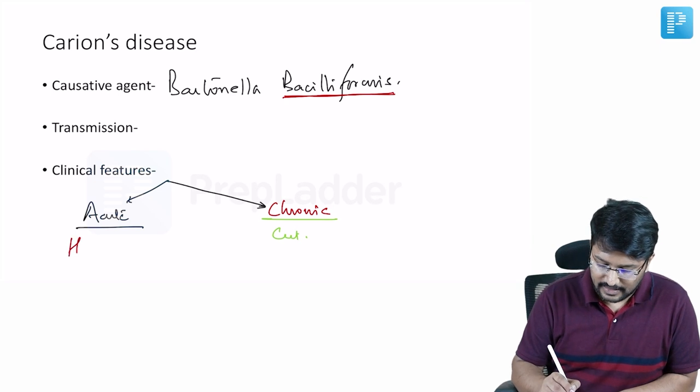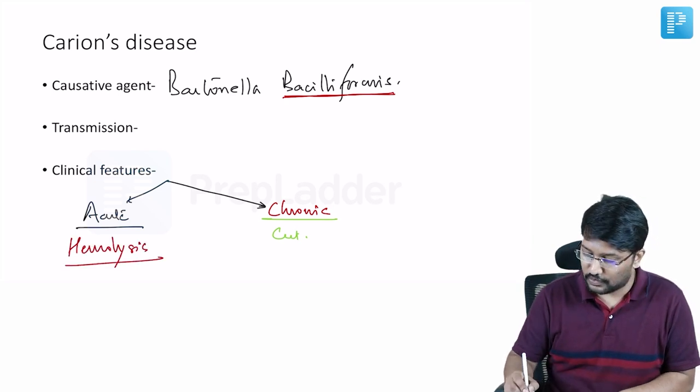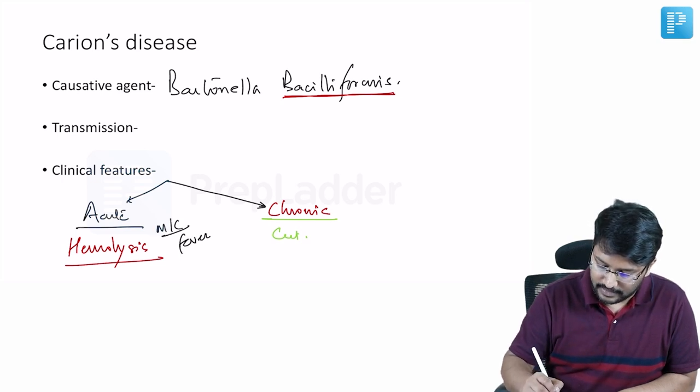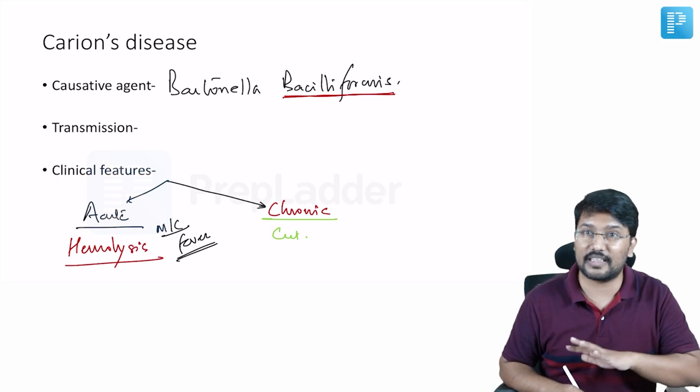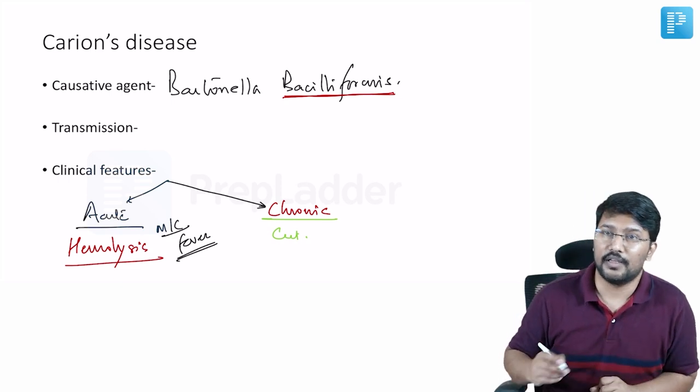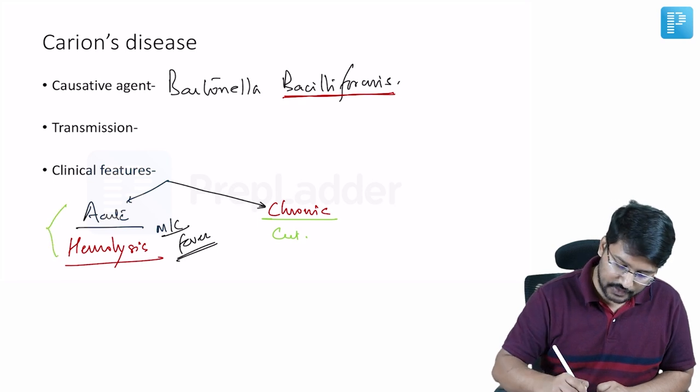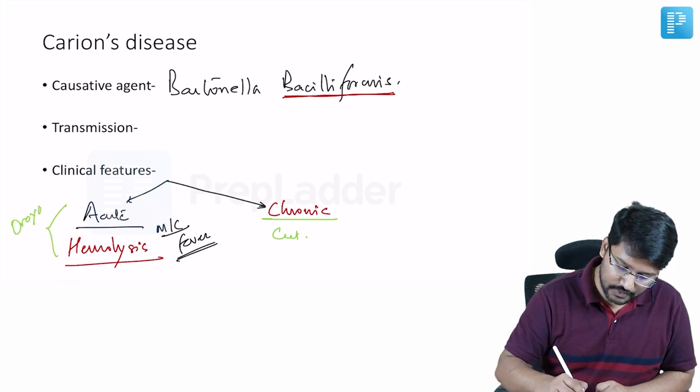Now acute phase is characterized by a febrile illness with significant hemolysis. So the most common complaint in the acute phase is indeed fever and a good number of these, in fact 96-97 percent of these patients have evidence of hemolysis and this is what we identify as Oroya fever.